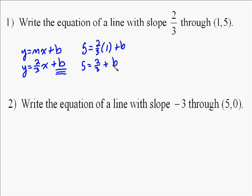Then you get 5 equals two-thirds plus b because two-thirds times 1 is two-thirds. Then we subtract two-thirds from both sides. Five minus two-thirds, well, you can either do it using common denominators or just understand that if you take away two-thirds from one, you've got one-third left. So it's four and one-third.